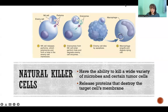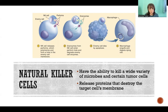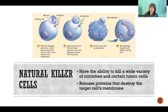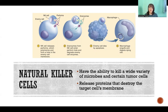Natural killer cells are immune cells that are still part of our innate immunity, meaning they are not adaptive and not specific. They can kill all sorts of different things, including our own abnormal cells. These can target all sorts of different microbes, but really their claim to fame is in preventing tumors from growing in your body.